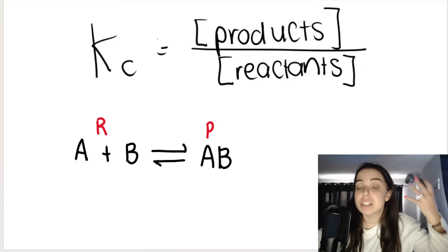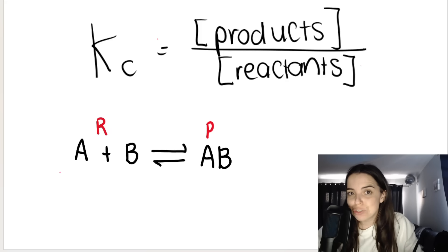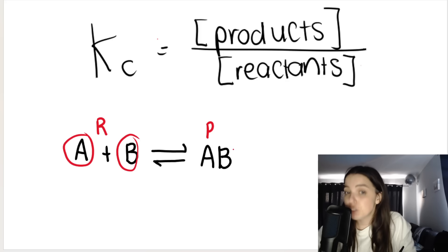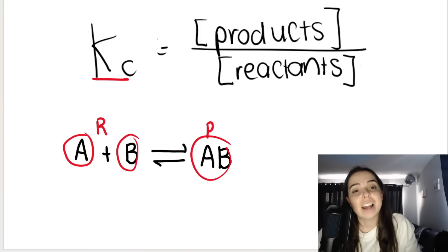When a reaction reaches equilibrium, we look at the concentration of the reactants, these ones over here, the concentration of A and the concentration of B, and we look at the concentration of the products. And using those two things together, we can calculate a value for Kc.